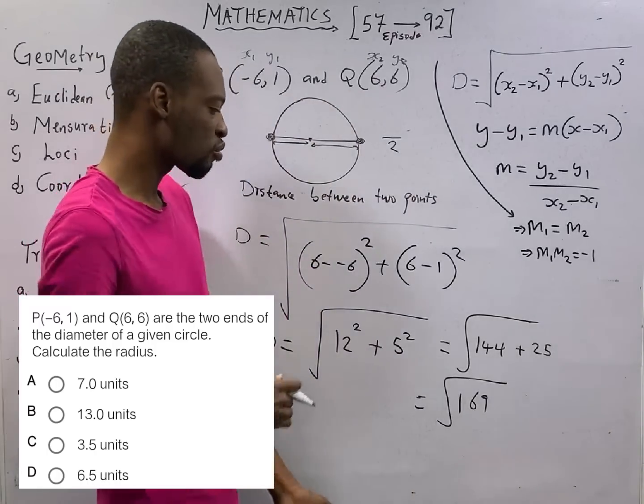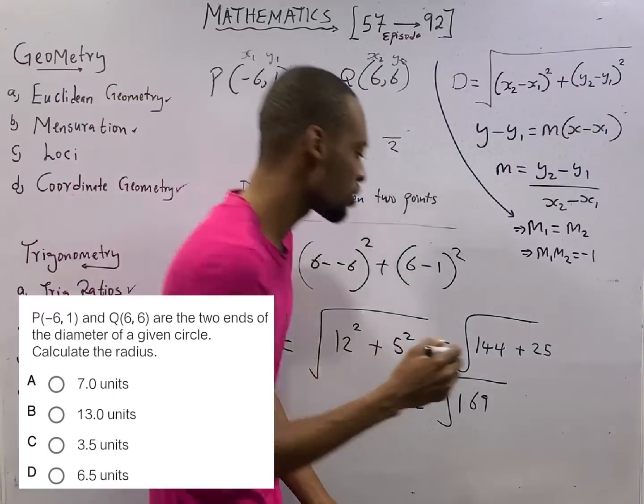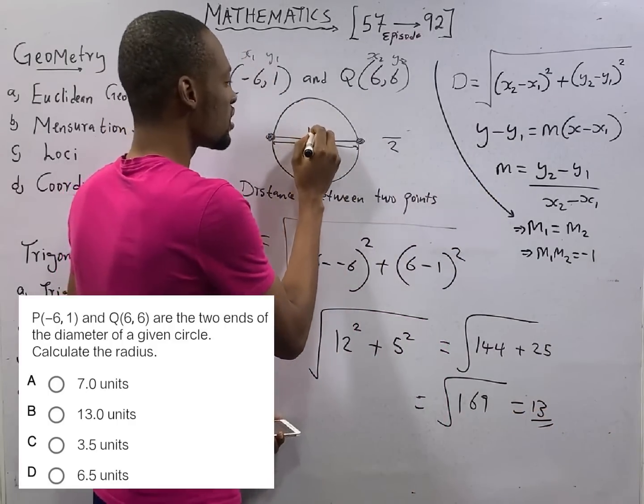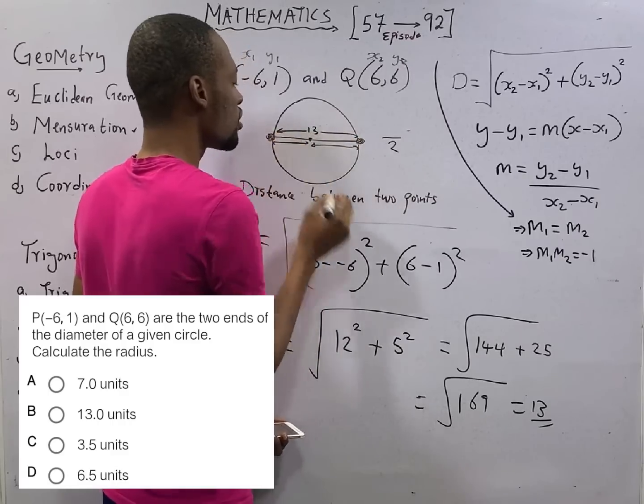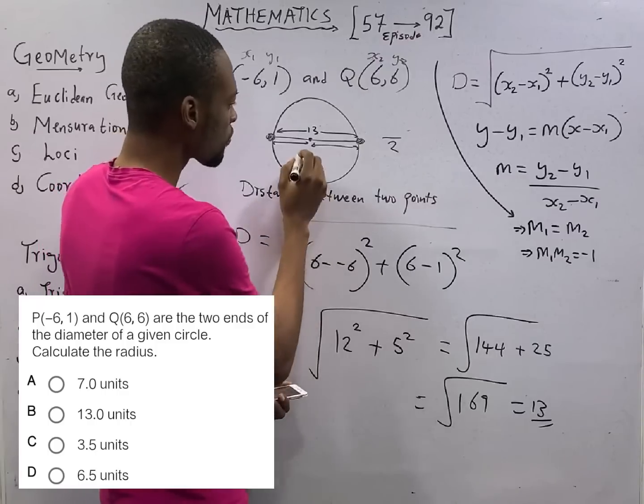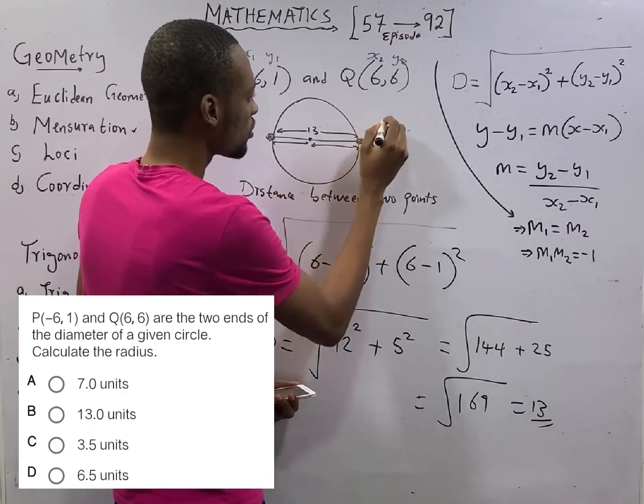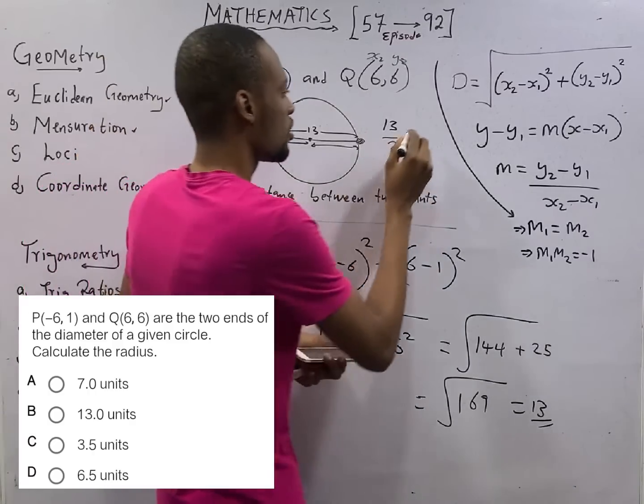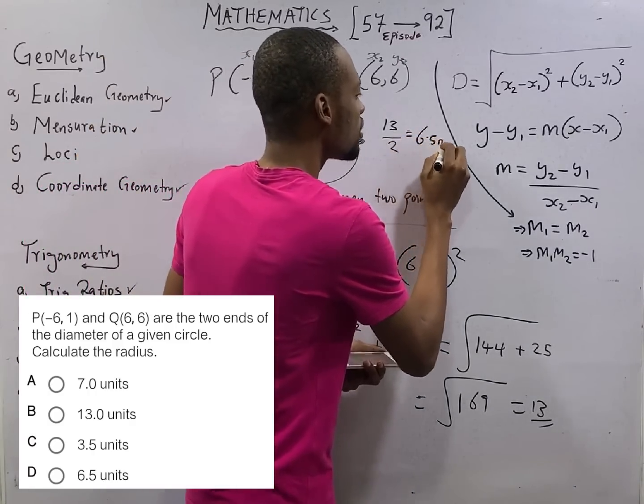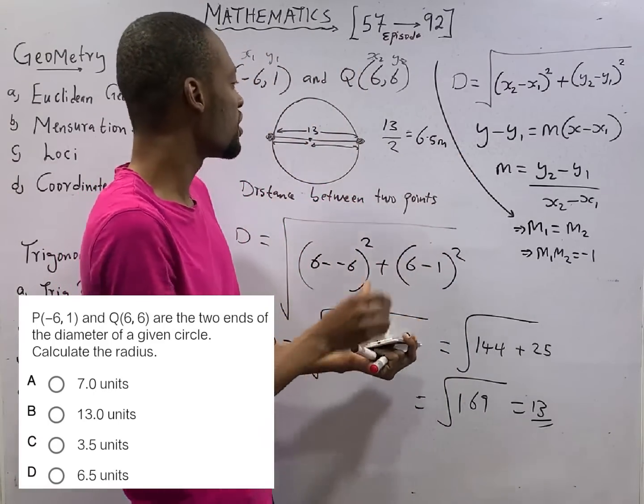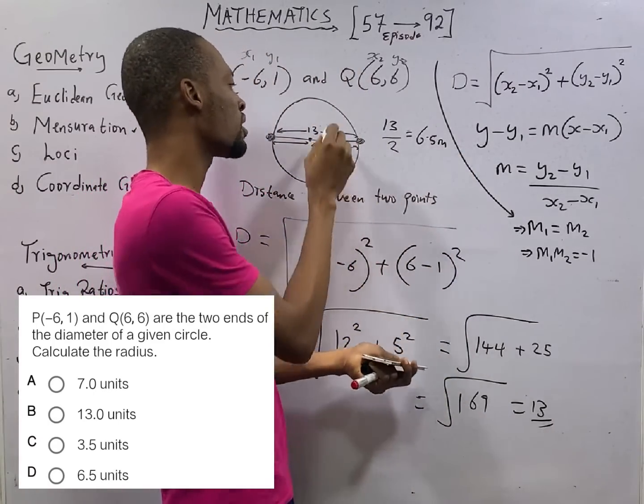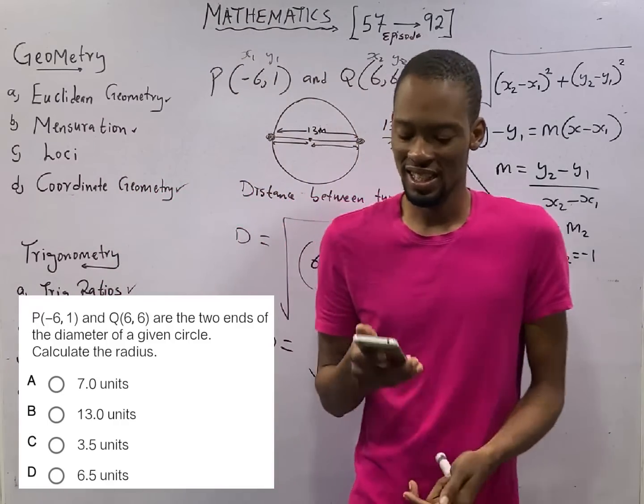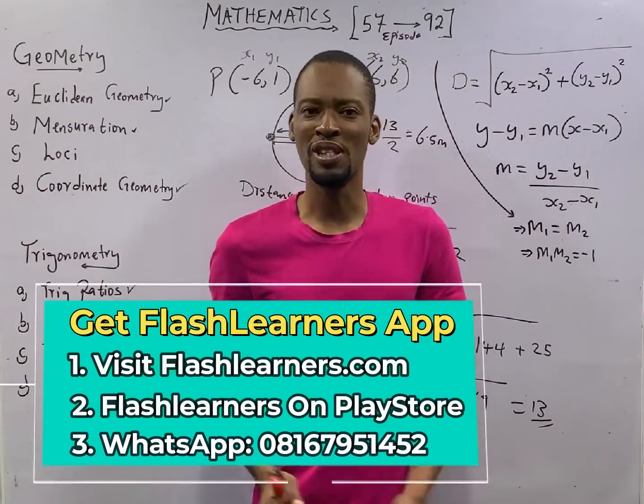From here to here is 13, the distance between two points. Your radius will therefore be 13 over 2, 13 over 2, that should be 6.5. So 6.5 is the radius, meanwhile the distance between the two points is 13 units. That is how to answer questions like this.